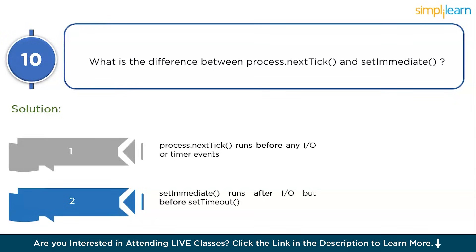Continuing the process.nextTick vs setImmediate differences: execution context — process.nextTick is designed for quick tasks needing to run before any I/O or timer events, used to modify the current operation before passing control back to the event loop. setImmediate is designed for executing callbacks after I/O operations. Blocking: process.nextTick called recursively can starve the event loop, blocking I/O and timers, whereas setImmediate avoids starvation by allowing the event loop to continue.